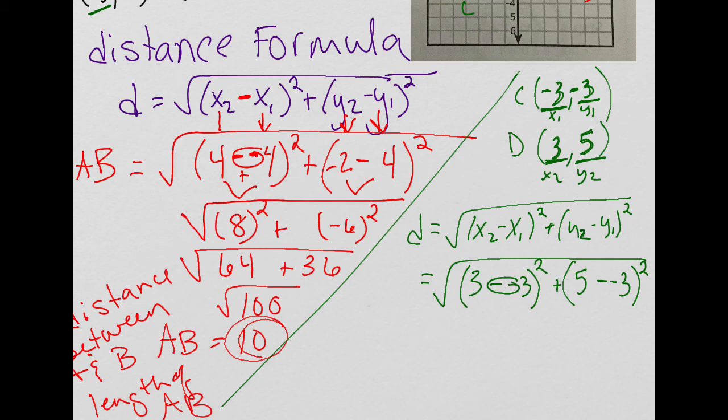So let's be extra careful here. X2 is a positive 3, X1 is a negative 3. Y2 is a positive 5, and Y1 is a negative 3. Okay, 2 positives is a positive. 3 plus 3 is 6, and I still have that squared. And plus 2 negatives is a positive again. 5 plus 3 is 8, still with that squared. 6 squared is 36. Plus 8 squared is 64. The sum of 64 and 36 is 100.